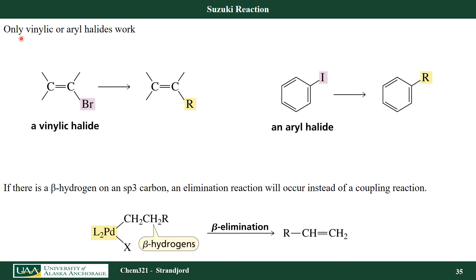So why only vinylic or aryl halides? Here is a vinylic halide — if I react that with my Suzuki reagents, I replace the halide with an R group. Because once I've done that insertion of palladium, if I have any beta hydrogens, they're actually susceptible to elimination, so I can remove two hydrogens and get an alkene. I don't have any beta sp3 hydrogens in either of these that can be eliminated, so I need a vinylic or arylic halide for this reaction to occur — otherwise, I get a side product.